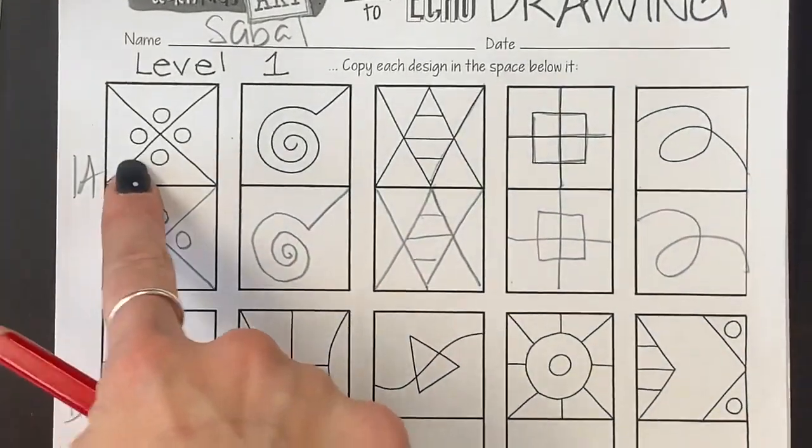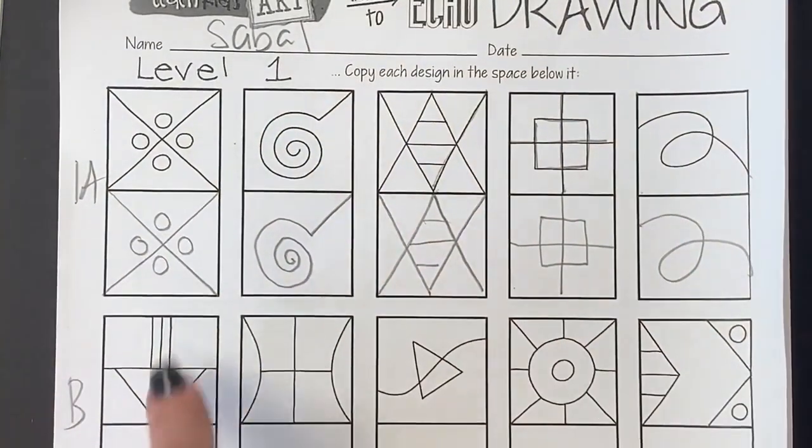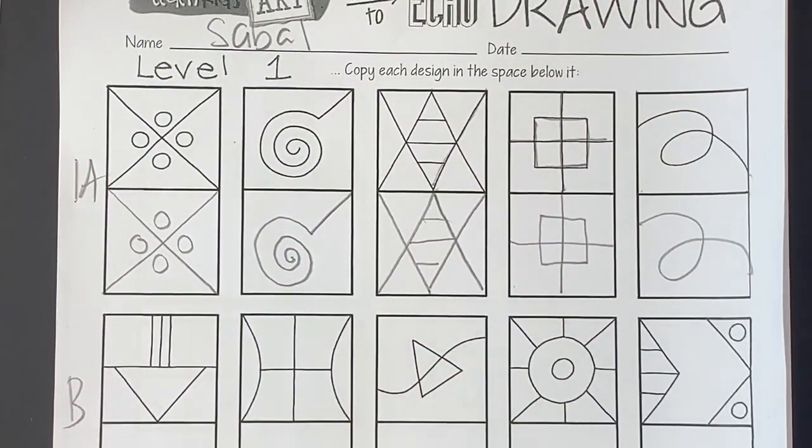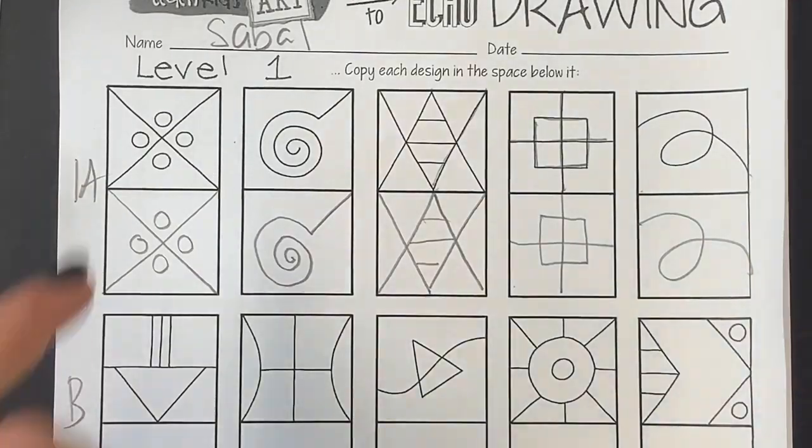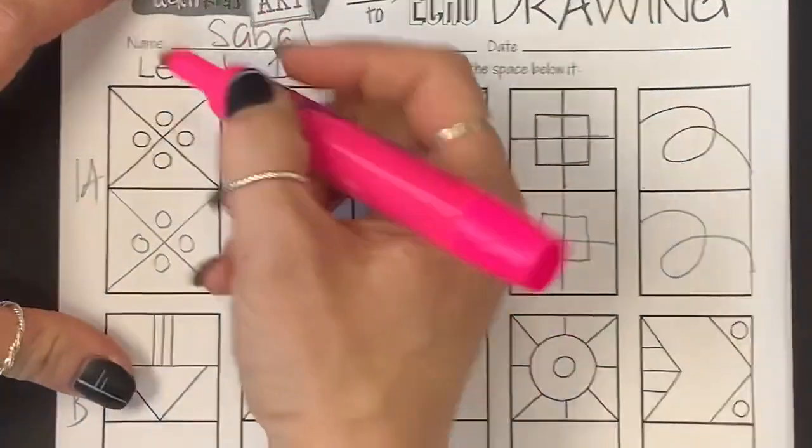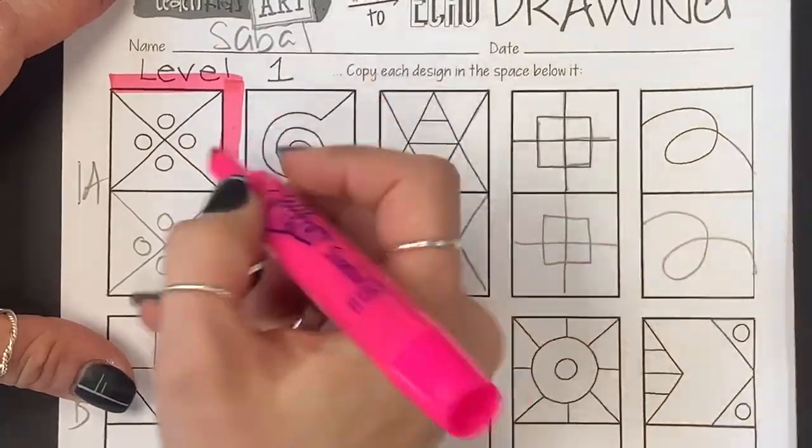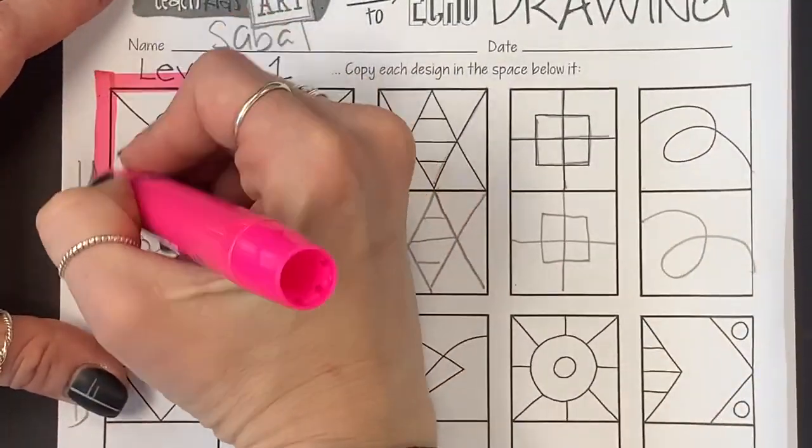Now that I've finished this whole level 1A, I need to choose which one is my favorite. I'm going to choose this one and I'm going to outline it with a color so I know this is the one that I'm doing.